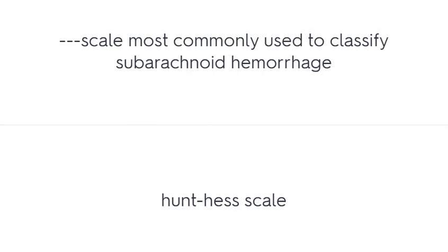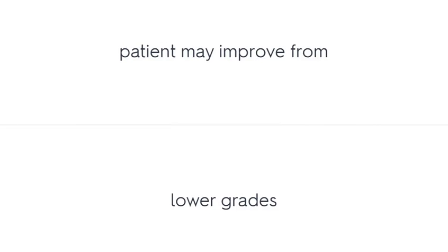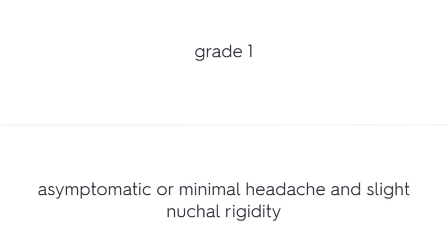The scale most commonly used to classify subarachnoid hemorrhage is the Hunt-Hess scale. It is the best predictor of outcome, and patients may improve from lower grades. The Hunt-Hess scale consists of grades 1 to 5. Grade 1 is asymptomatic or minimal headache with slight nuchal rigidity.